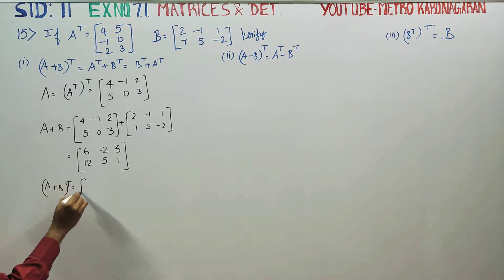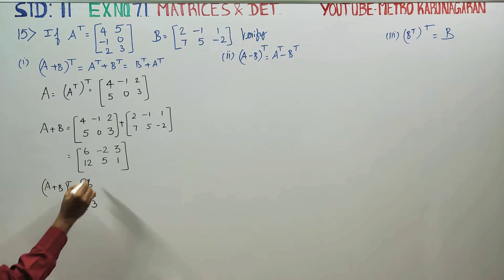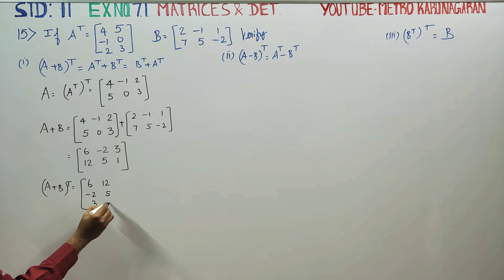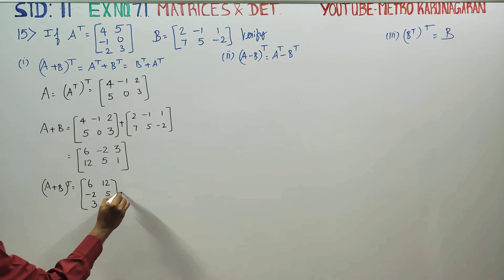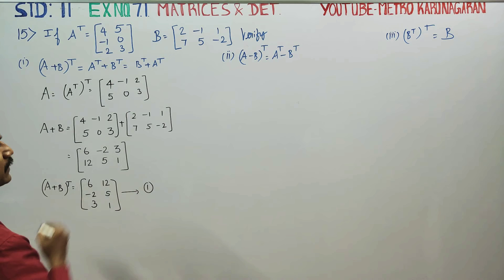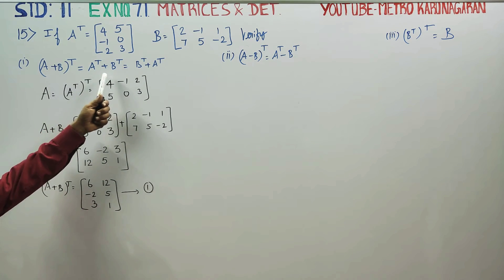Now, A plus B whole transpose. Taking the transpose of A plus B, we get: 6, minus 2, 3 in the first row and 12, 5, 1 in the second row. This is result number 1.